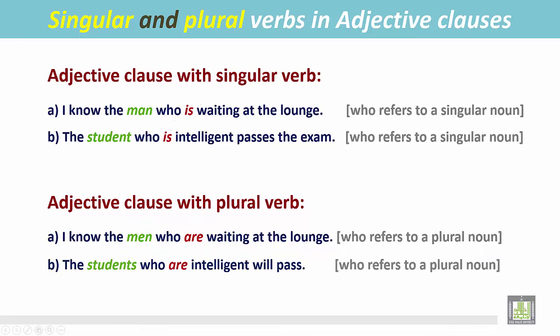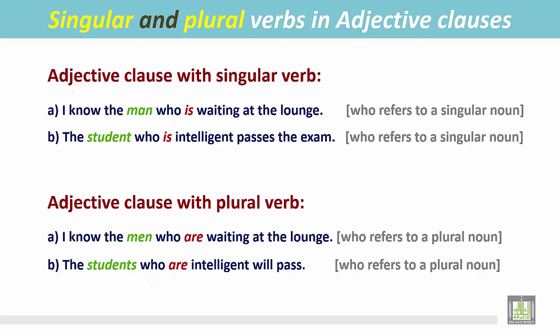Another example: 'The students who are intelligent will pass.' In this sentence, the adjective clause begins with 'who' — 'who are intelligent.' It modifies or follows the noun immediately. The noun is 'students,' which is a plural noun, so the verb inside the adjective clause is also plural.